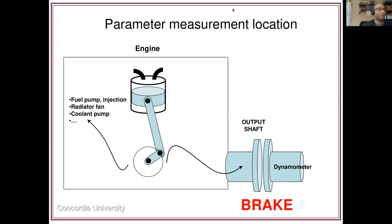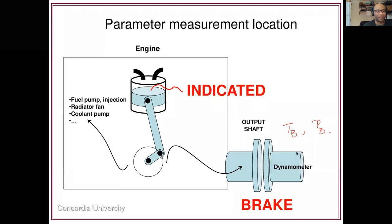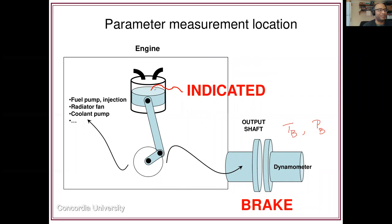Out at the dynamometer we would be measuring the brake torque and the brake power. The power and torque we obtain at the output actually has a source — the thermodynamic system itself, the gas. We call these the indicated parameters: indicated torque, indicated power, and so on. These are what we predict and calculate with thermodynamics.